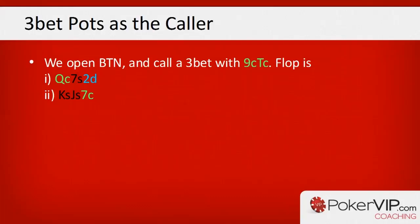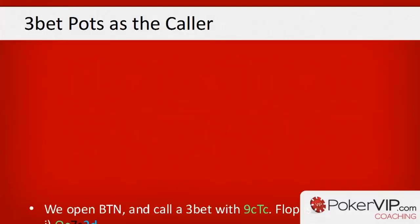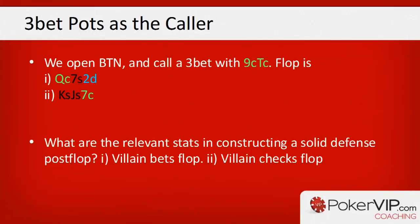Let's think about the following example: we open-raise on the button with the nine of clubs ten of clubs, call a regular-size 3-bet, and think about what we're going to do on each flop texture. Assuming we do have some sample size on our opponent, the first scenario is our opponent bets the flop on a queen-seven-two rainbow board.